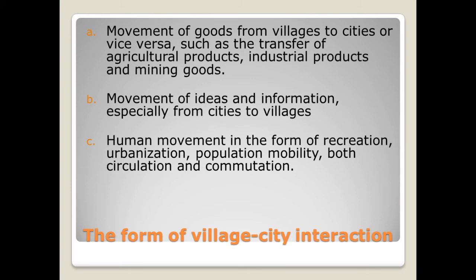Forms of village-city interaction: (a) Movement of goods from village to city or vice versa, such as the transfer of agricultural products, industrial products, and mining goods. (b) Movement of ideas and information, especially from cities to the village. (c) Human movement in the form of migration, urbanization, population mobility, both circulation and commuting.